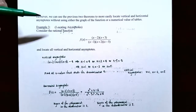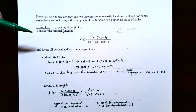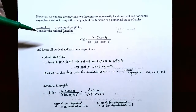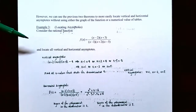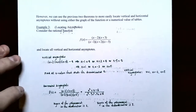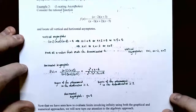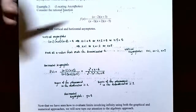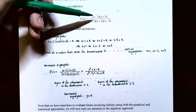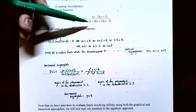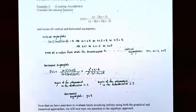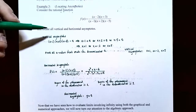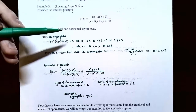There is a more efficient way to find horizontal and vertical asymptotes — by looking directly at the function. Example three: locating asymptotes. Consider the rational function f(x) = [(x − 2)(x + 3)] / [(x − 1)(x + 2)(x − 5)]. Locate all vertical asymptotes and any horizontal asymptote.